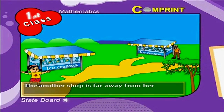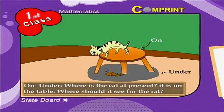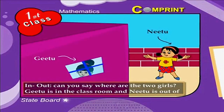On and under — to know the positions of on and under, let us watch the pictures. Where is the cat at present? It is on the table. Where should it look for the rat? The rat is under the table. So the cat is on the table and the rat is under the table.